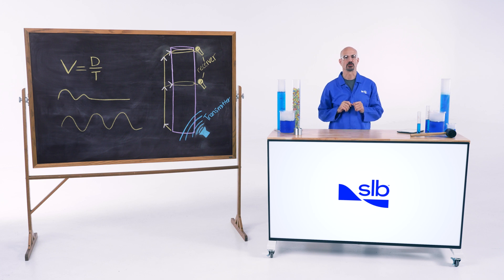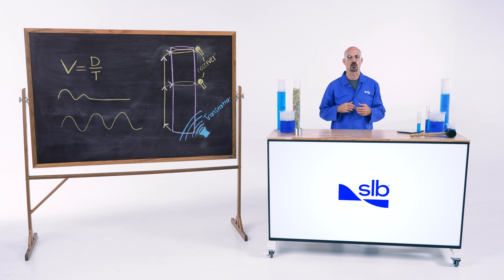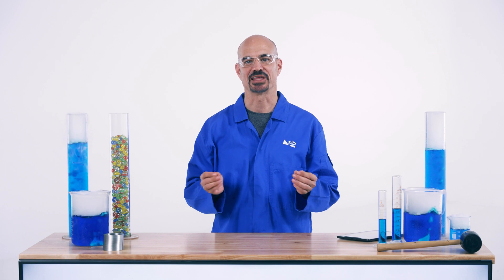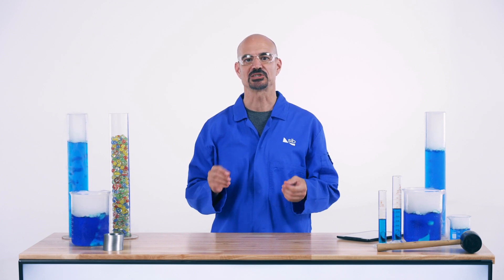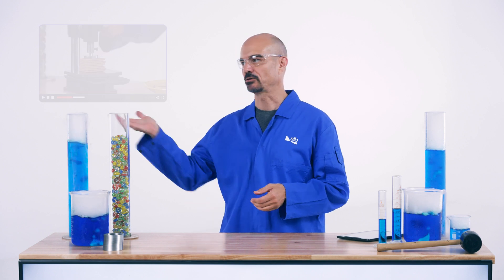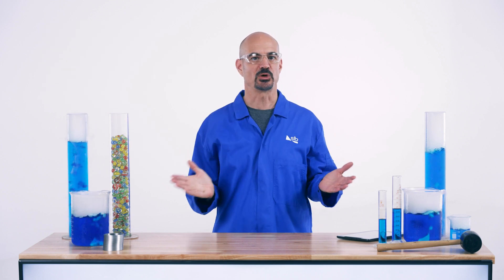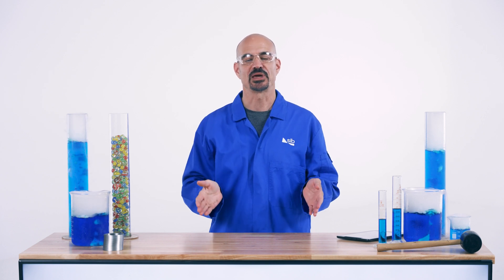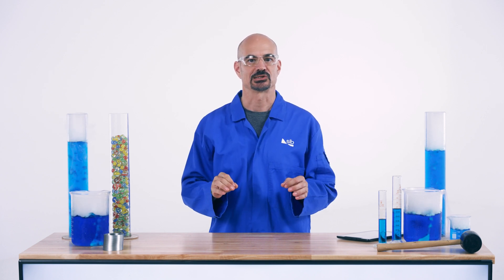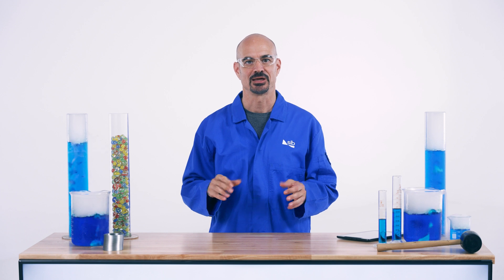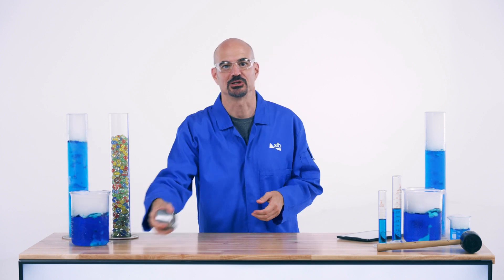We do perform a lot of testing on core samples in the lab, but we can also measure many of the same things in a well. Now let's take a look at how we make measurements down hole in a well. We'll take mechanical properties as an example. We can't lower the press we used in the last episode, so we need another way to stress the formation and measure the response. The answer, it turns out, can be found in my favorite childhood toy.